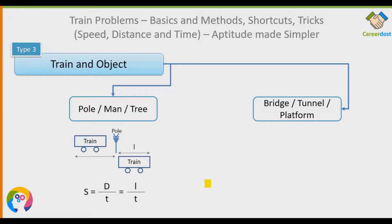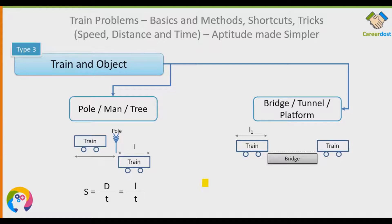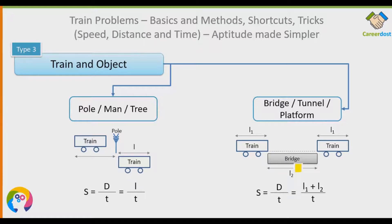When a train crosses a bridge, tunnel, or platform, the length of the train is L1 and the length of the bridge is L2. The train has completely crossed the bridge when its rear end clears the far end of the bridge. So the distance traveled is L1 + L2, and the formula becomes S = (L1 + L2) / T.